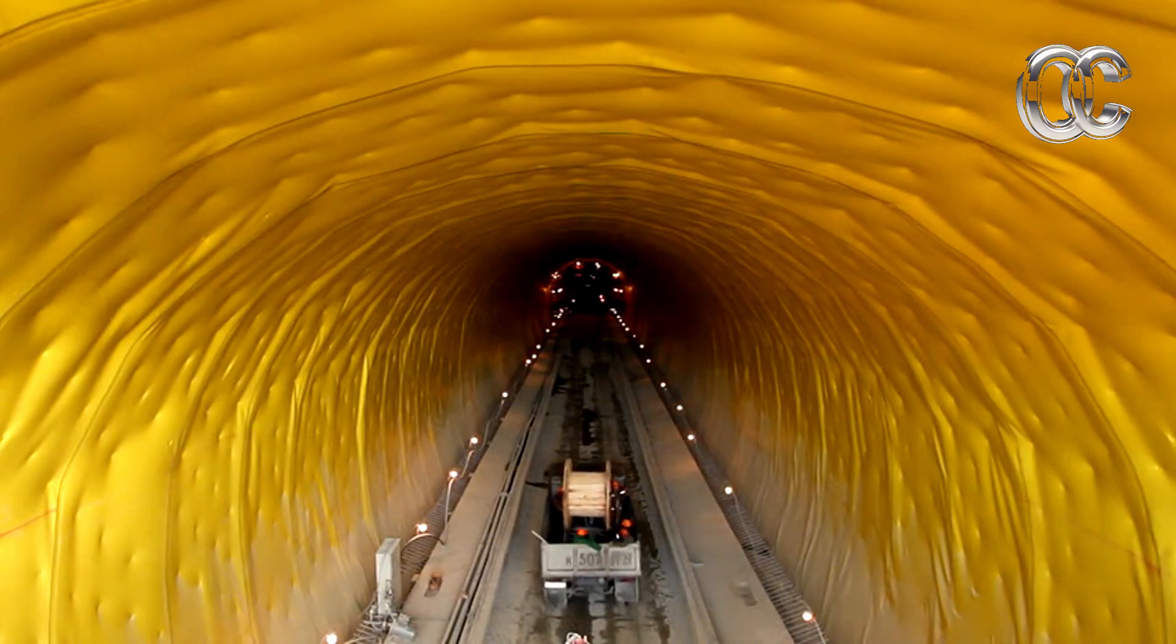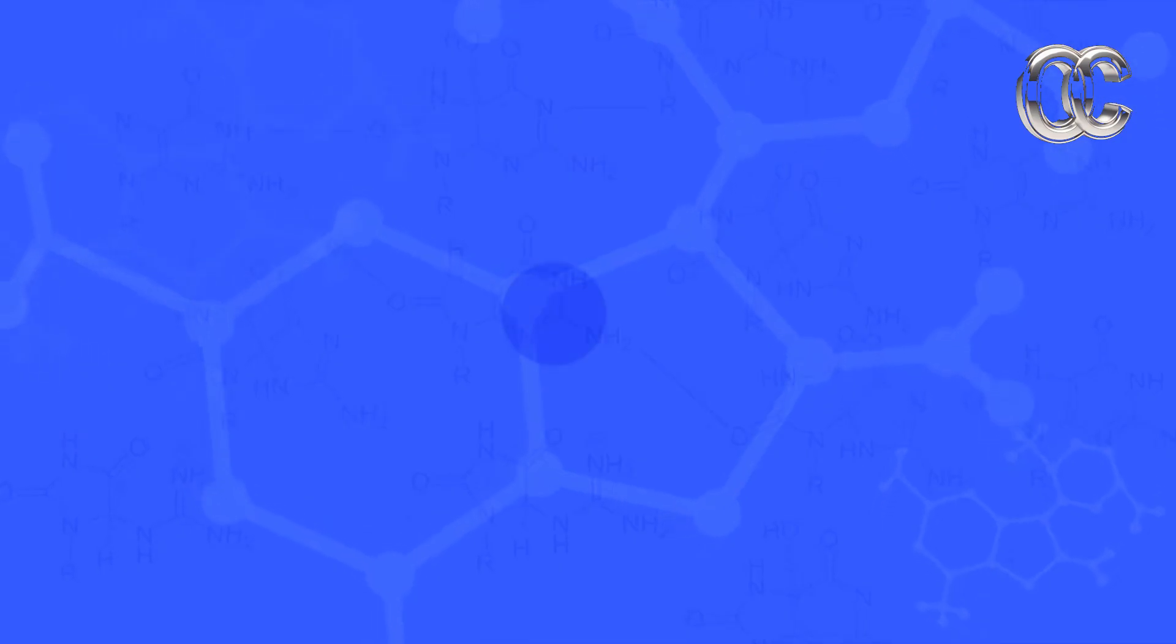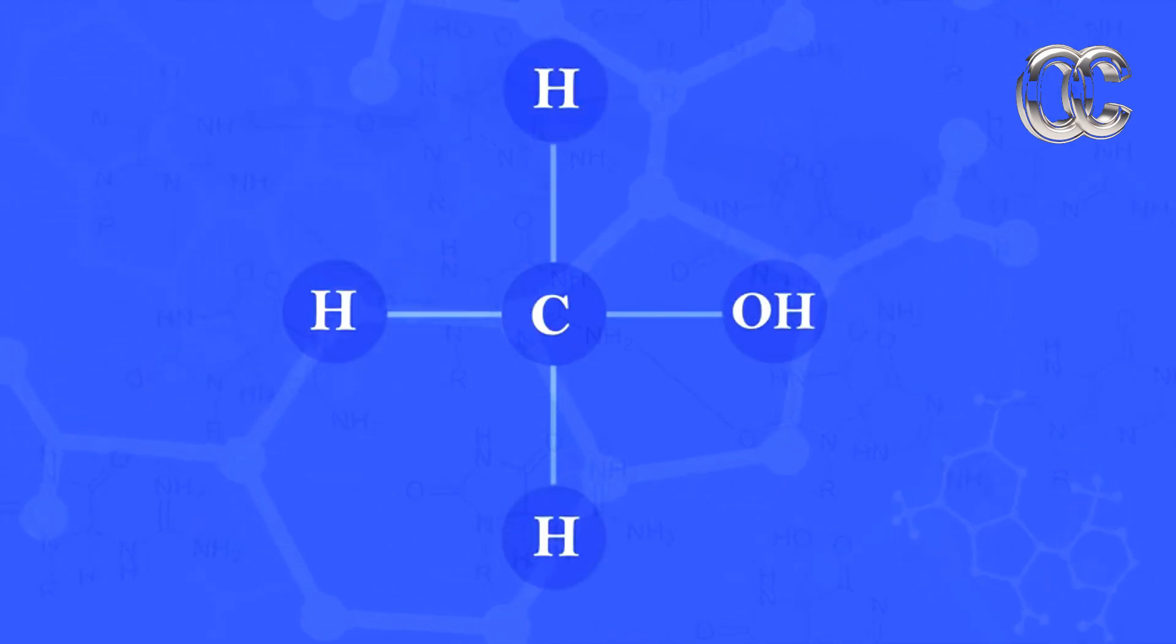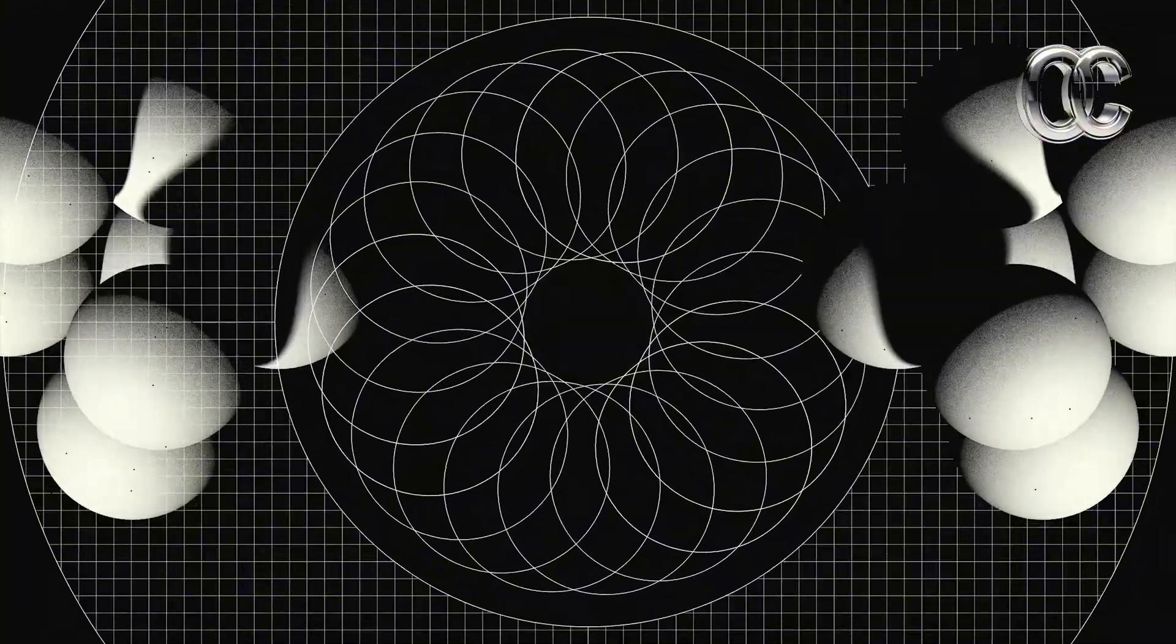Tunneling plays a role in chemical reactions too. In reactions involving hydrogen transfer, tunneling can allow the hydrogen nucleus to move between atoms even when classical energy isn't sufficient. This is particularly important in enzyme reactions and cold chemistry, where energy is limited.